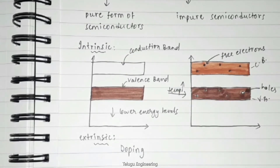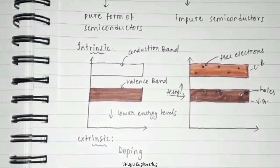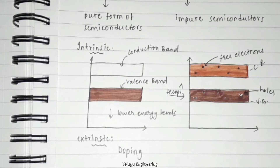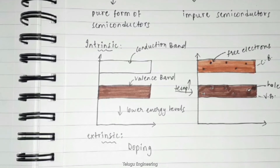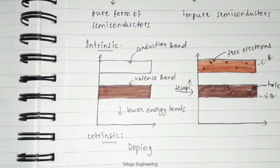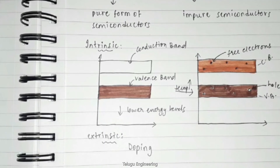The amount and type of impurity to be added must be closely controlled during preparation. Depending on the type of impurity added, extrinsic semiconductors are classified as n-type and p-type. In an n-type semiconductor, pentavalent impurities from the fifth group elements are added to the pure semiconductor. Examples include arsenic, antimony, and bismuth. These pentavalent impurities provide extra electrons and are termed donor atoms, making electrons the majority charge carriers in n-type semiconductors.